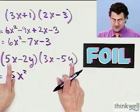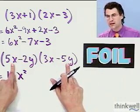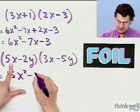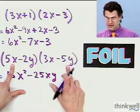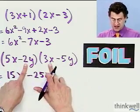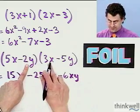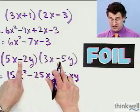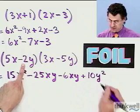So outsides. So 5x times negative 5y. Be so careful here, that negative sign makes it negative. 5 times 5 is 25, and I've got an x and I've got a y, so it's minus 25xy. My inside terms produces a negative 6xy. And my last times, the last negative times a negative is a positive. So I've got a plus 10y times y is y².